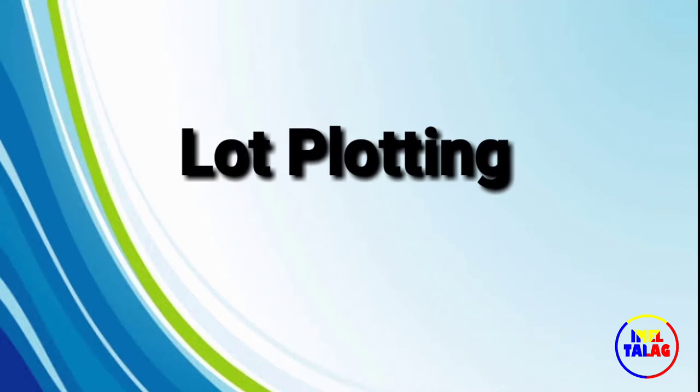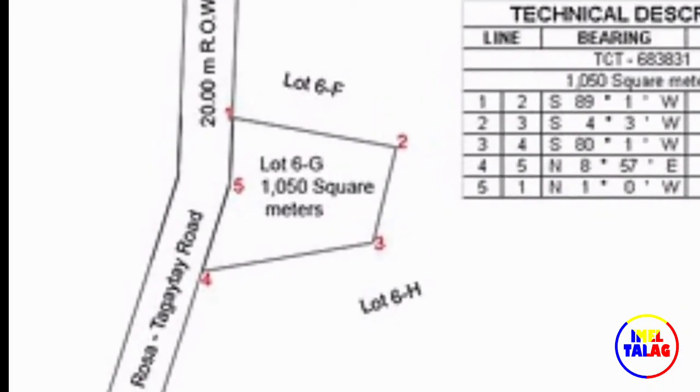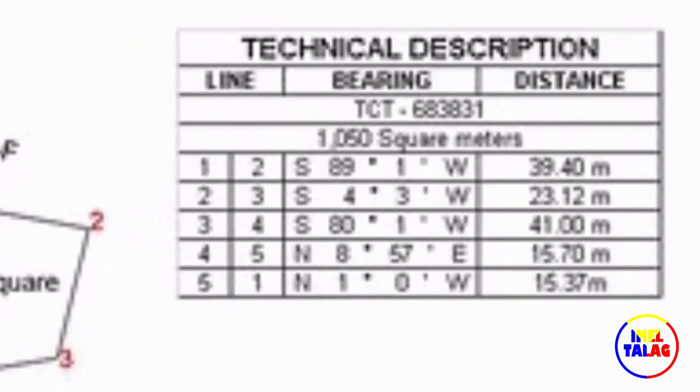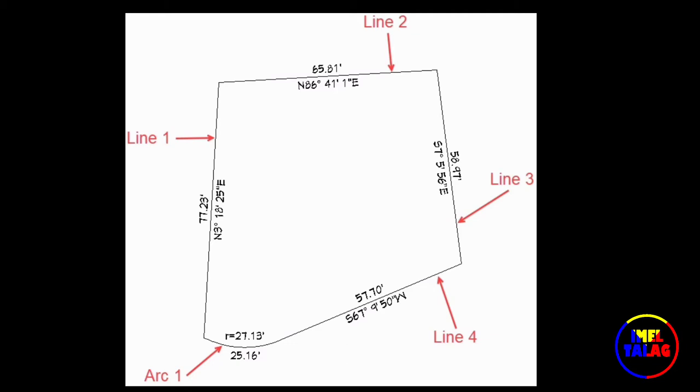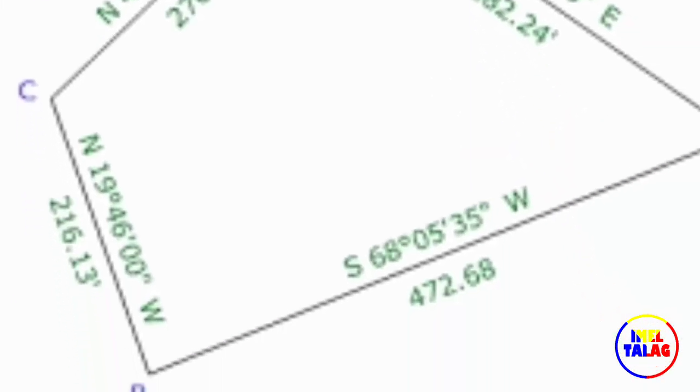Lot plotting is a drawing of the exact shape and measurement of a particular lot from the technical descriptions shown in the title. The boundaries and lot orientation on the north, east, west, and south are also attained.